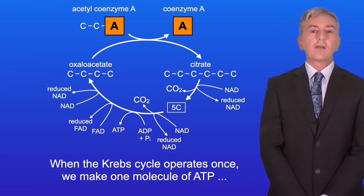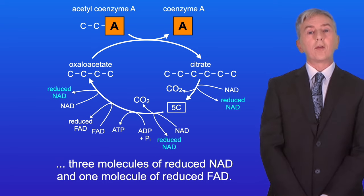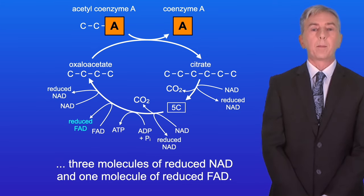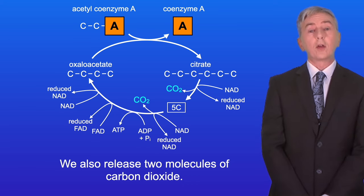Okay so when the Krebs cycle operates once we make one molecule of ATP, three molecules of reduced NAD and one molecule of reduced FAD. We also release two molecules of carbon dioxide.